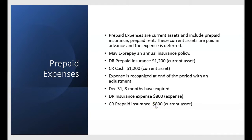Insurance expires at a rate of $100 a month because the $1,200 spent was for an annual policy — $1,200 divided by 12 months is $100 a month. So when we determined that eight months expired on December 31st, that's why we debited insurance expense $800 and credited prepaid insurance $800, recognizing $800 of accrual basis expense.